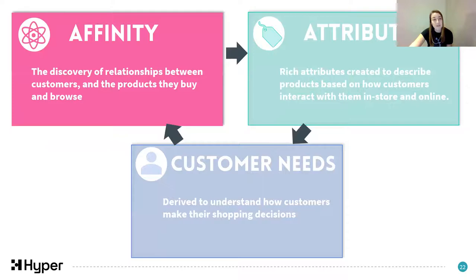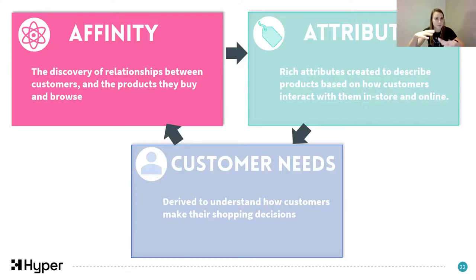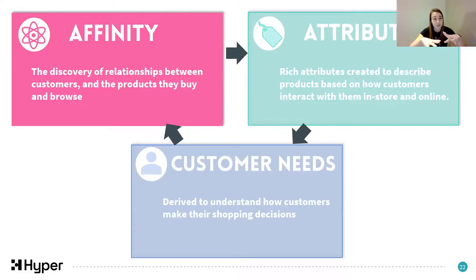Starting with Affinity - you only need quite simple data to generate these. All you need to know is what your customers are buying, which products they're buying in each of their visits. Once you know this, you can calculate basket affinities, which are combinations of products bought within the same visit. You can also calculate customer affinities, which are combinations of products customers are buying, but not necessarily within the same visit - just during their lifespan of shopping with you.